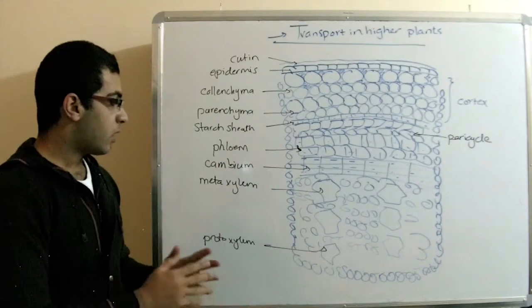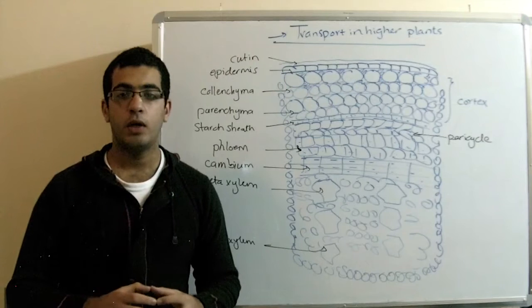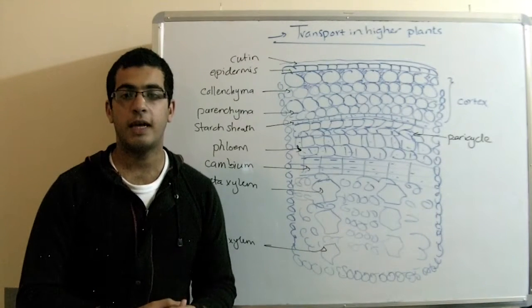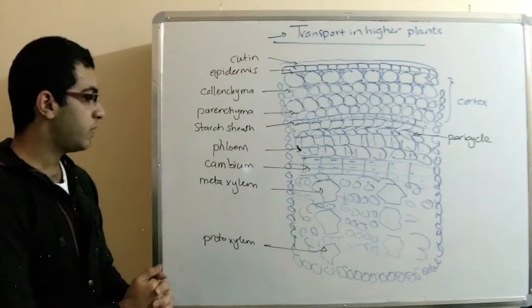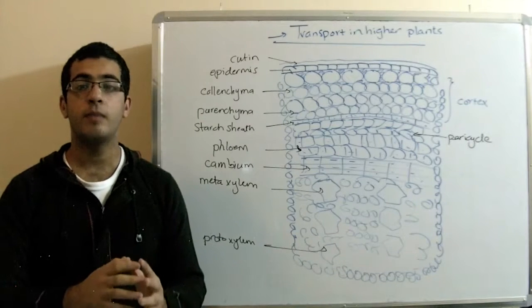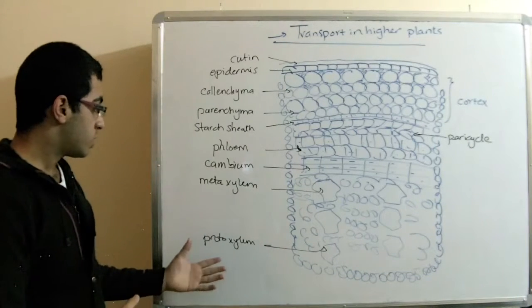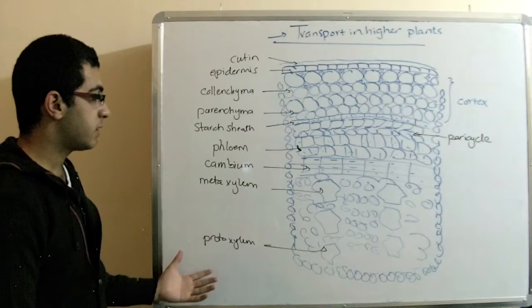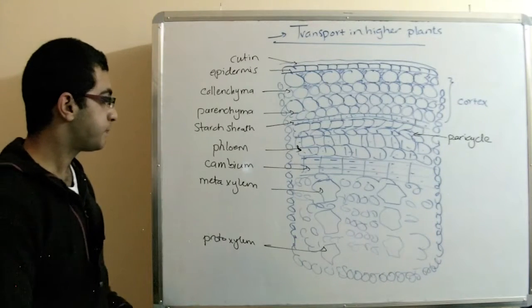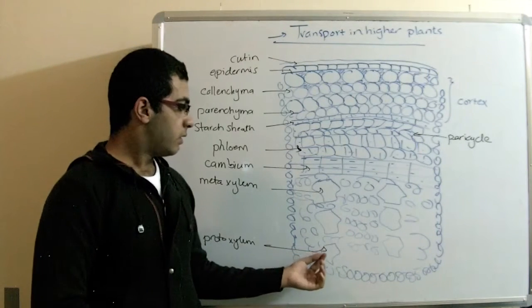Well, actually, they were formed of cells in which the protoplasm was killed and the walls between the cells were removed. So, it's made hollow vessels, which are used for the purpose of translocation of water and mineral salts.